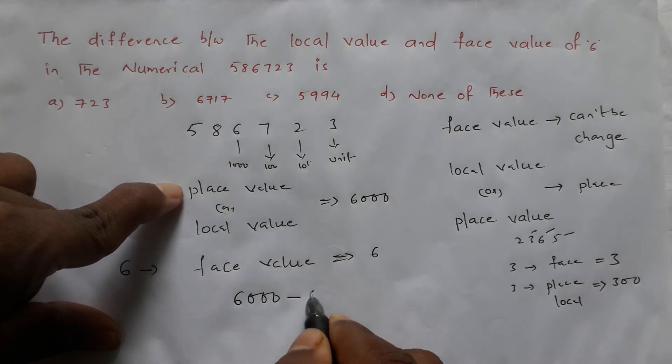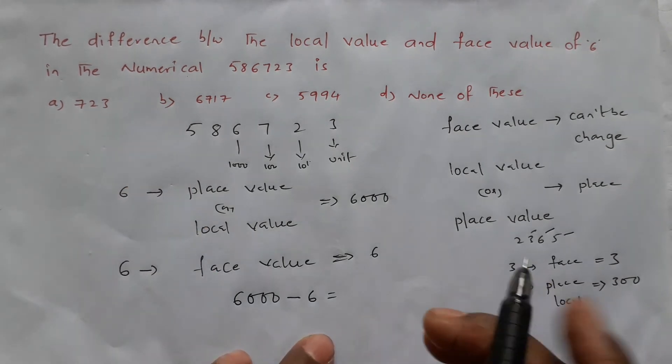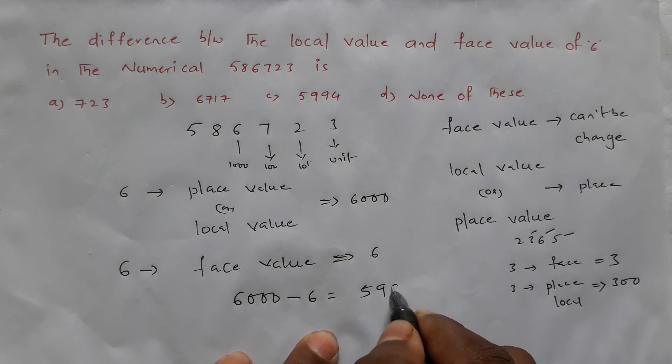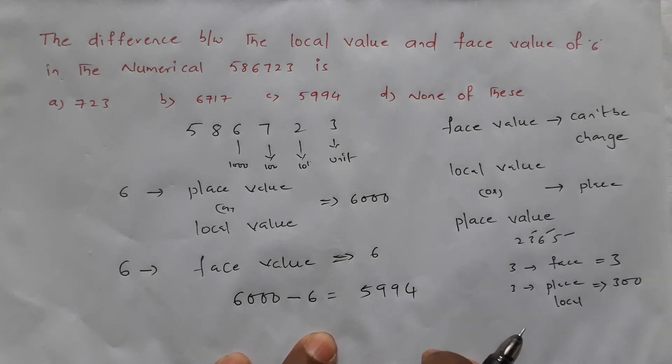The difference: 6000 minus 6 equals 5994. Option C is the right answer.